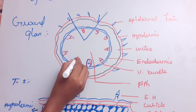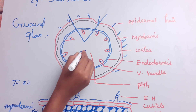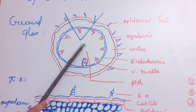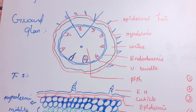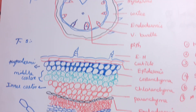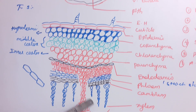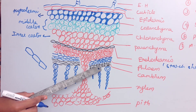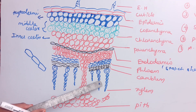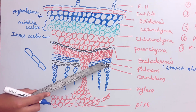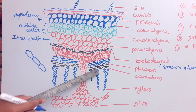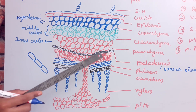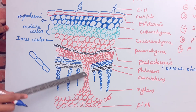In the center of the vascular bundle is the protoxylem, and toward the outside is the metaxylem. This arrangement is called endarch xylem. So the xylem is end-arch in the dicot stem.